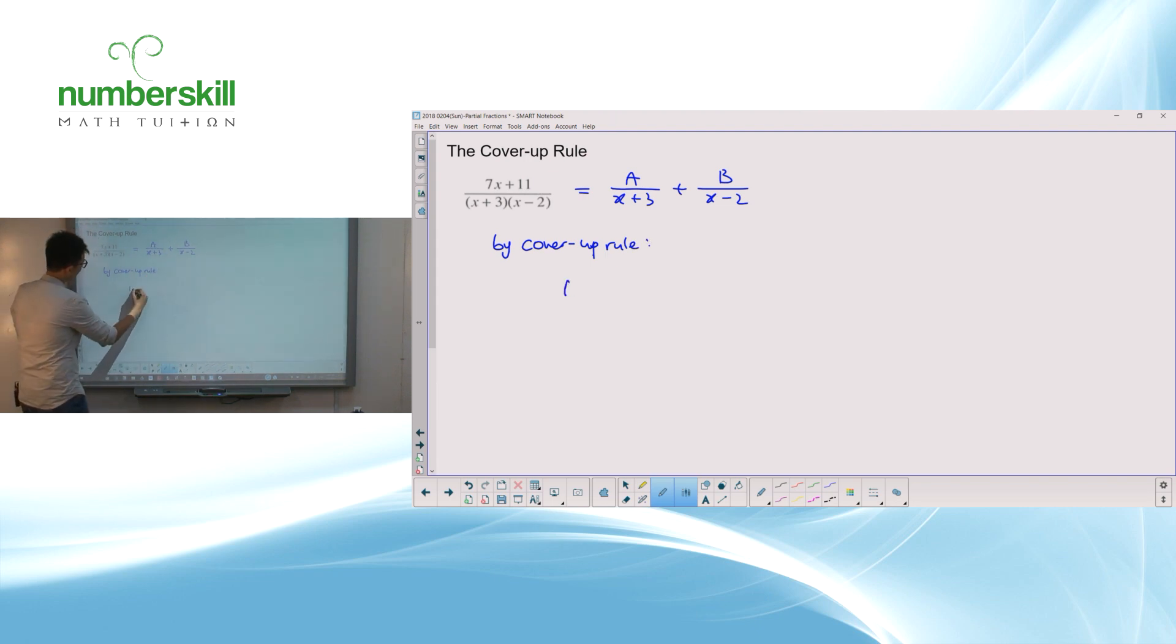How do I do that? Well, basically, A must be equal to minus 21 plus 11 over minus 5. And you get the answer of minus 10, right? So it should be 2. That's my A.